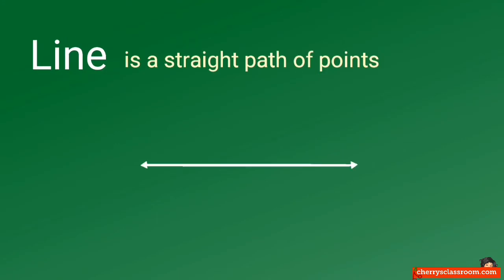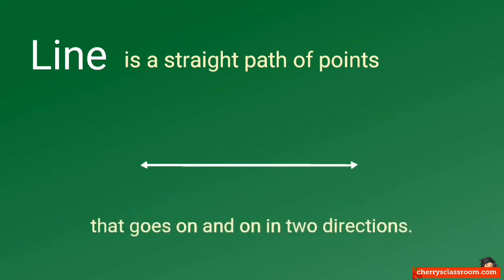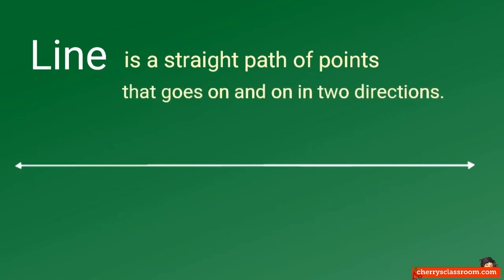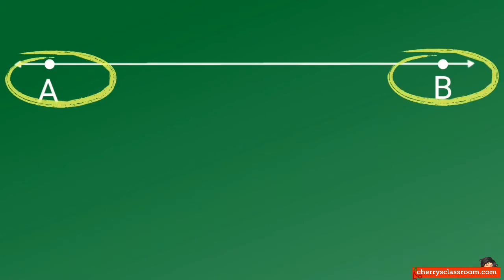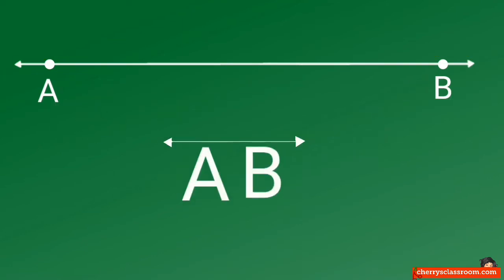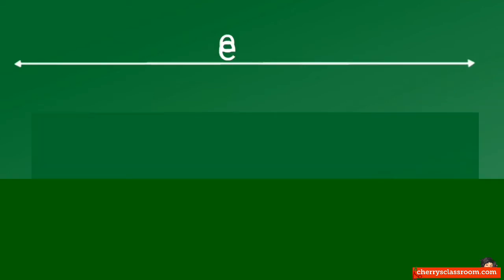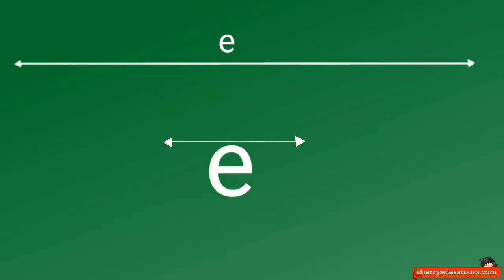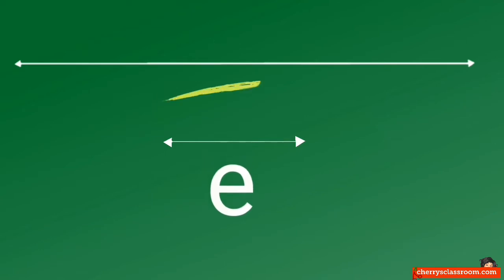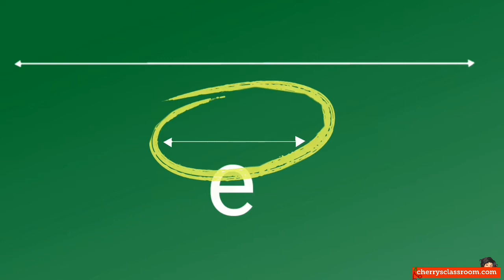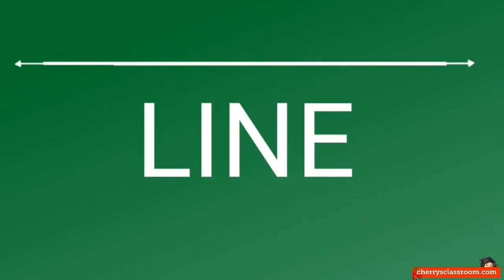Remember that a line is a straight path of points that goes on and on in two directions. A line can be named either using two points on the line — here we have line AB, also can be named line BA — or by using one letter, usually lowercase. Example: line E. We use this symbol to represent a line.